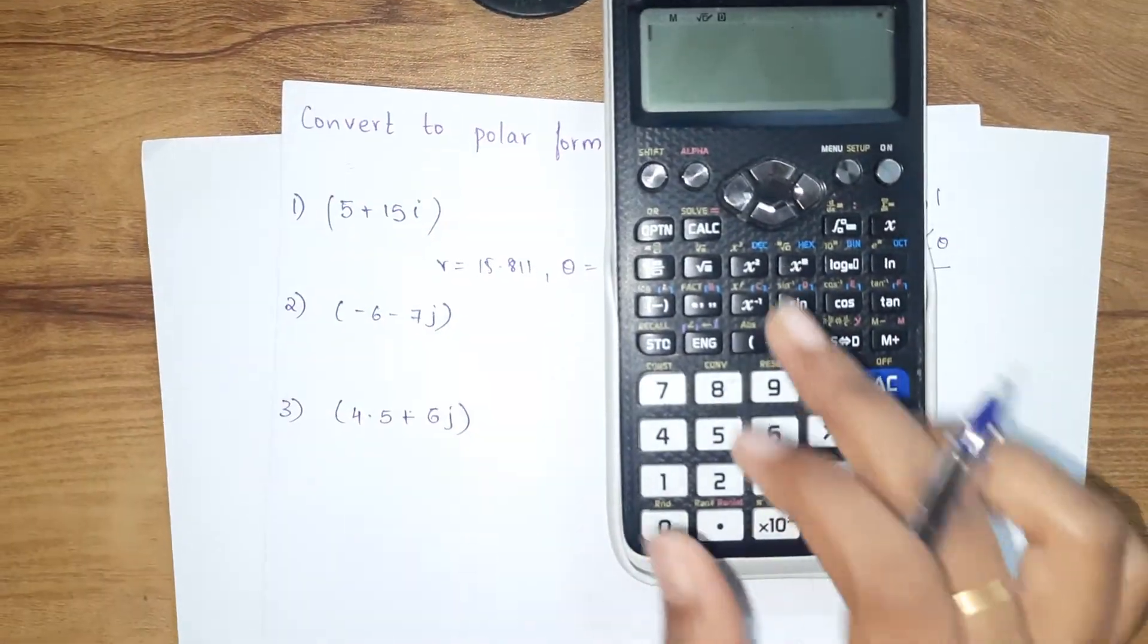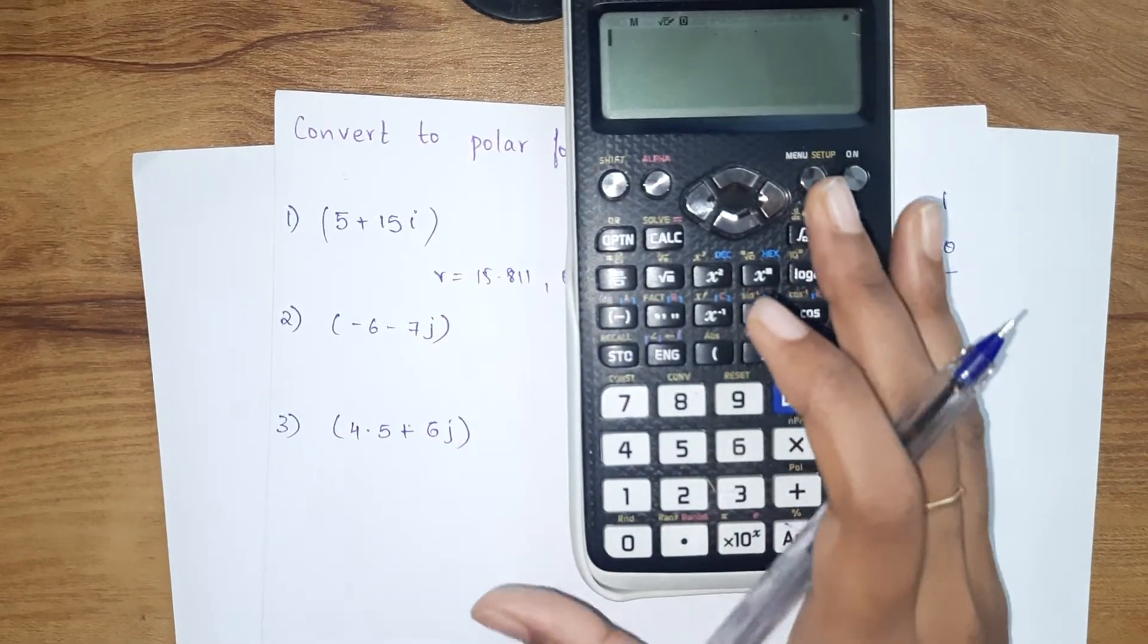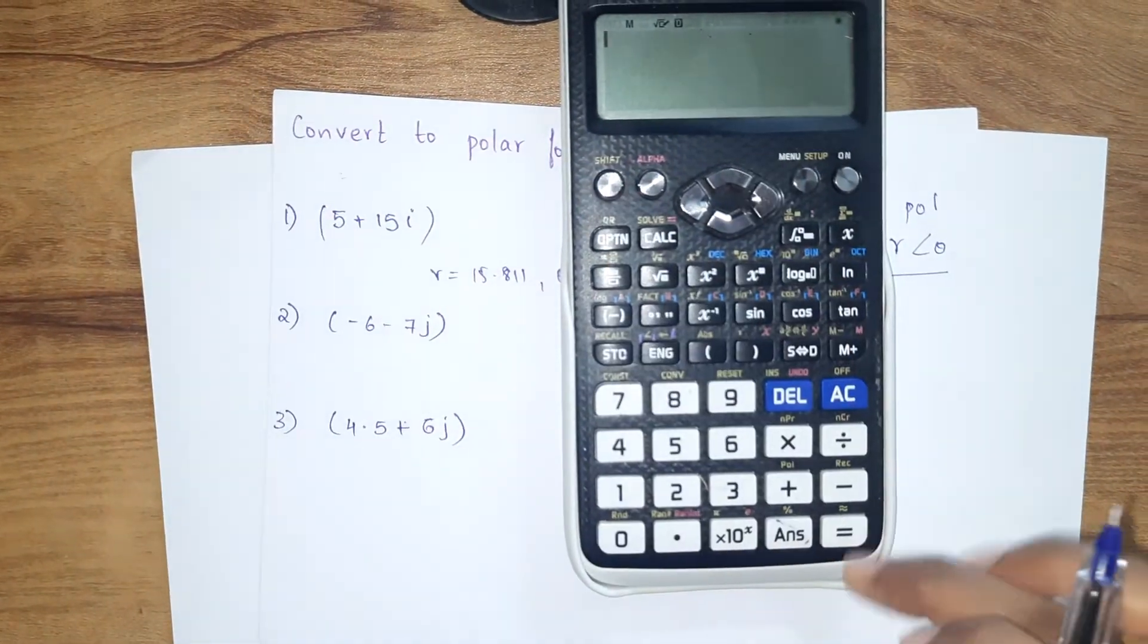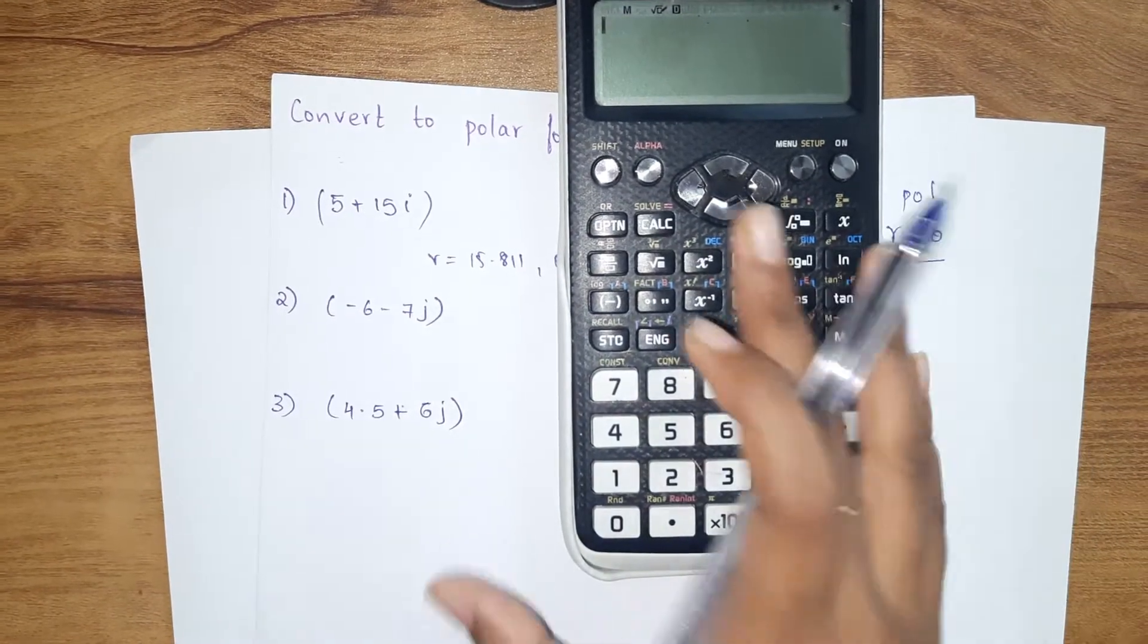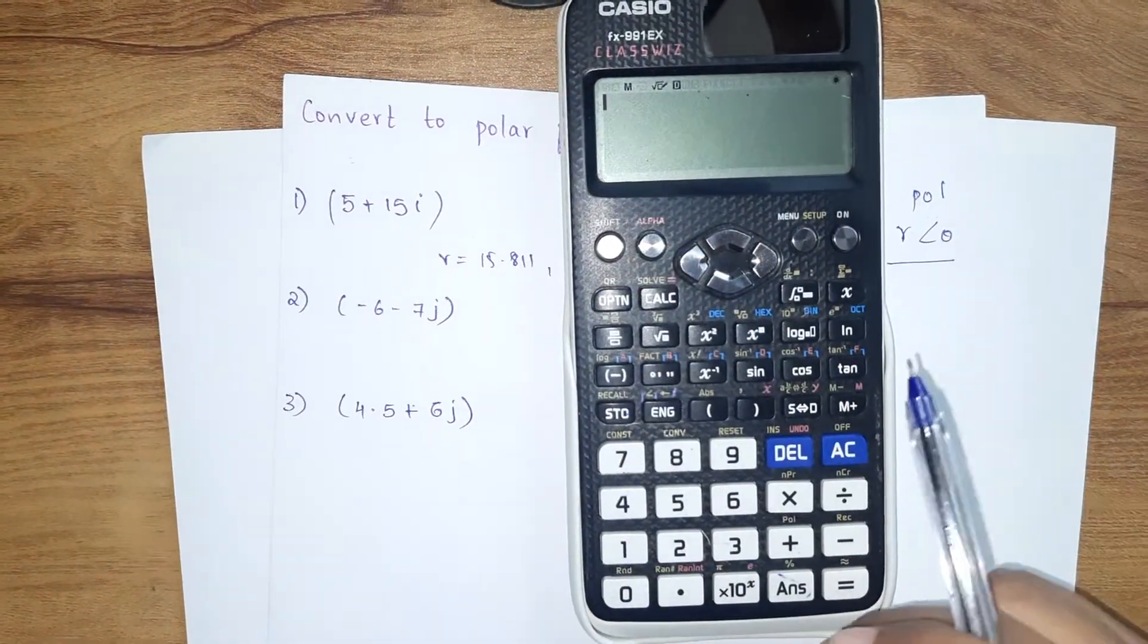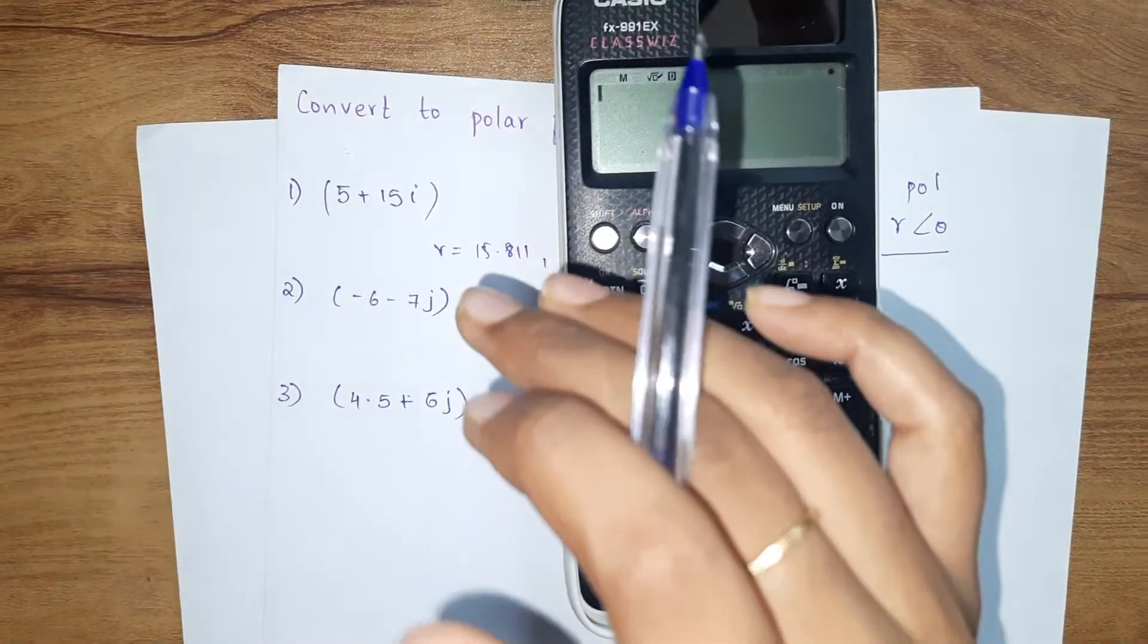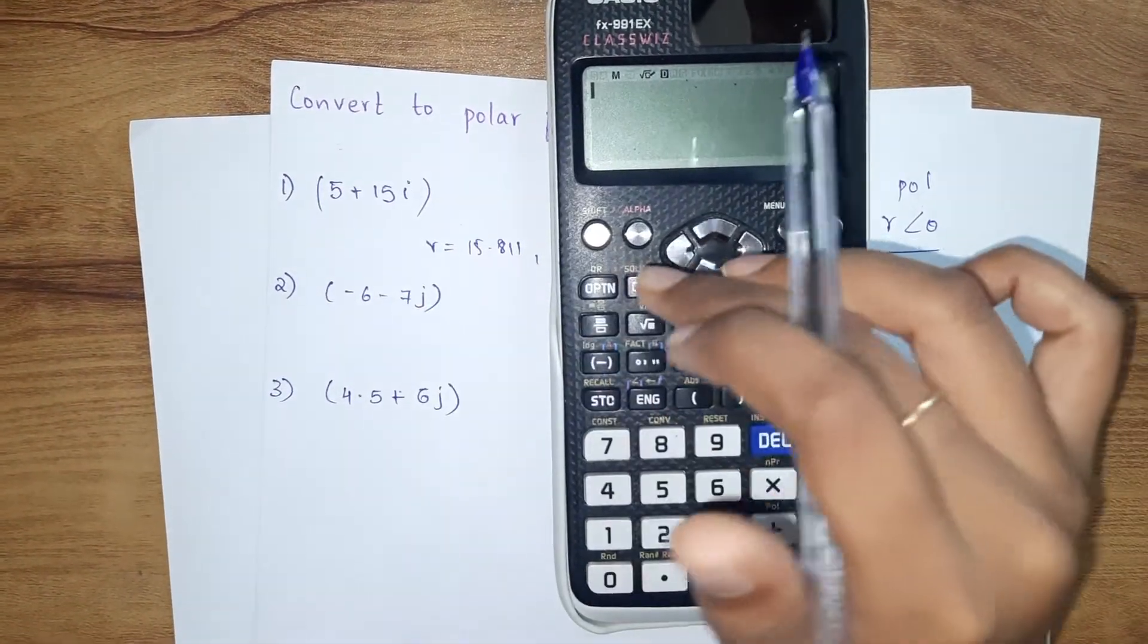That was easy. In the previous video we converted from polar to rectangular. For that, shift - whatever answer we want. Here we need polar form, so make sure that shift pole.